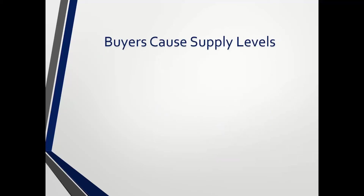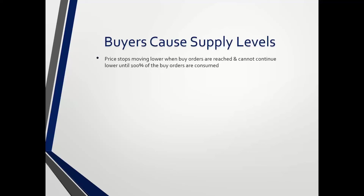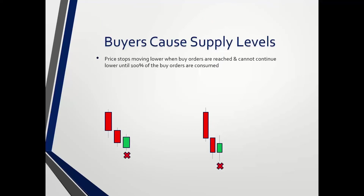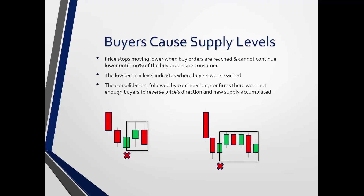Conversely, buyers cause supply levels. That sounds weird because supply is sell orders, but buyers cause those supply levels to form — it leaves footprints on the charts for us. Price stops moving lower when buy orders are reached and cannot continue lower until 100% of the buy orders are consumed. The consolidation followed by continuation confirms there were not enough buyers to reverse price's direction, thereby new supply accumulated.